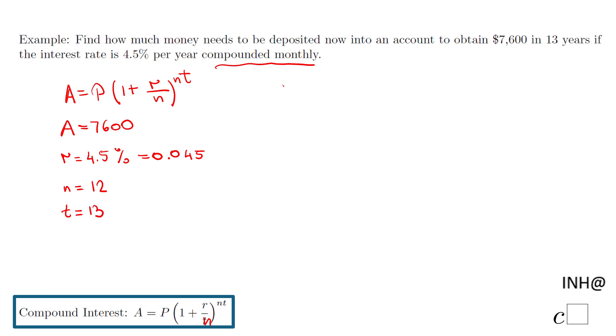So we're going to put all these numbers here. This is 7600, the money we want in 13 years. We don't know how much P is, and we have here 1 plus 0.045 divided by 12 to the power of 12 times 13.